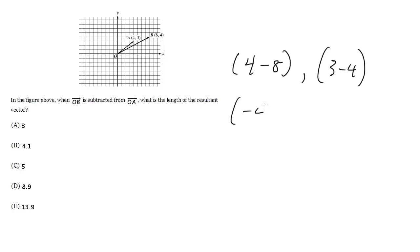So when all is said and done, we're going to get negative 4 and negative 1 as the components of our new subtracted vector. So if we were to graph that, we would get this vector right here.